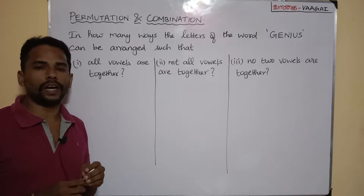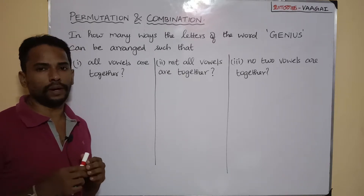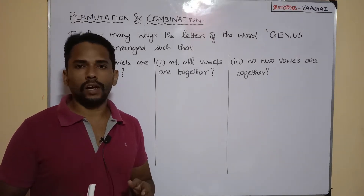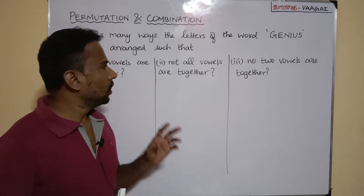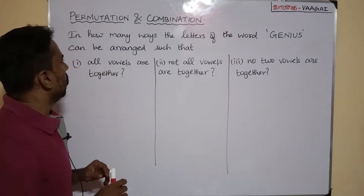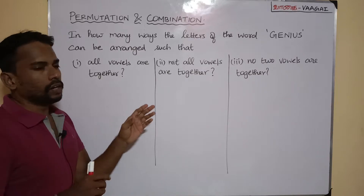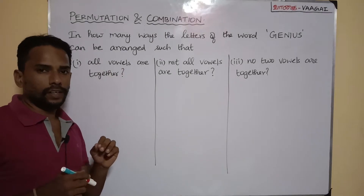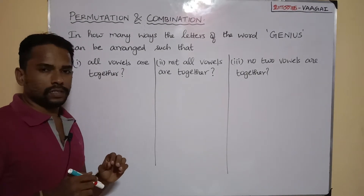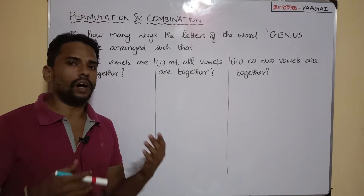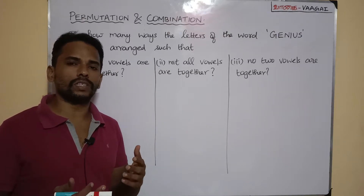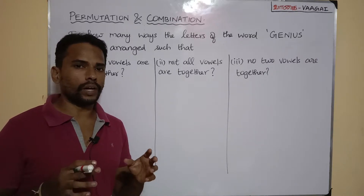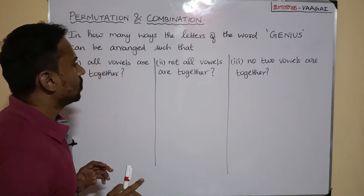Hello all, welcome back once again to our channel Vague Academy of Mathematics. In this session we are about to solve a very frequently asked problem from permutation and combination. The question is: in how many ways can the letters of the word GENIUS be arranged? There are three subdivisions, and these kinds of questions appear very frequently in many exams.